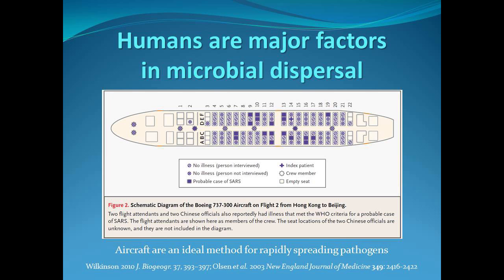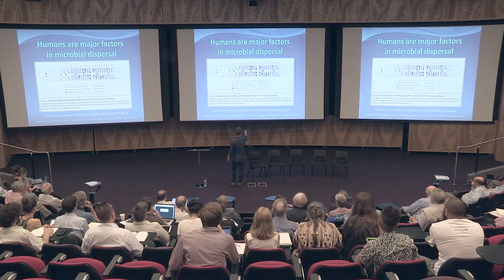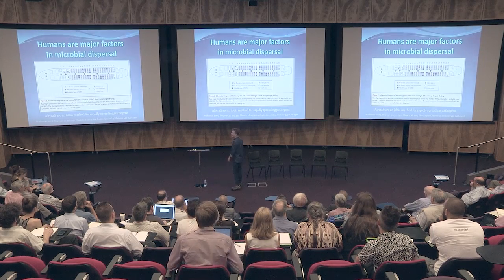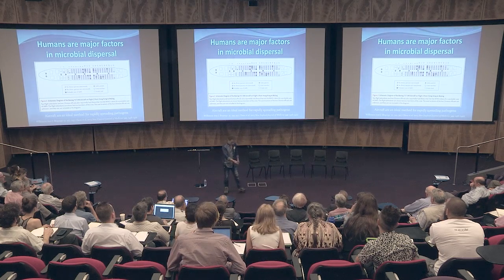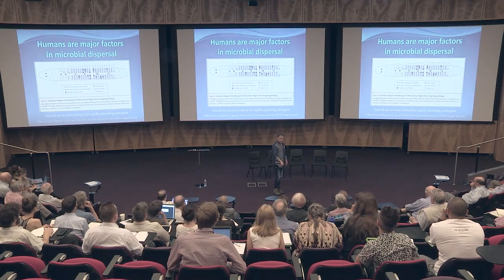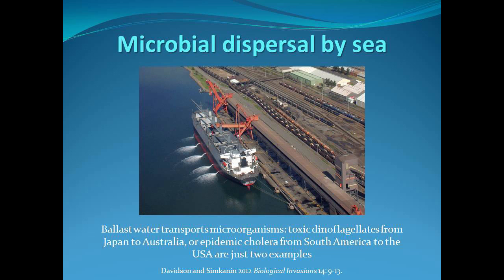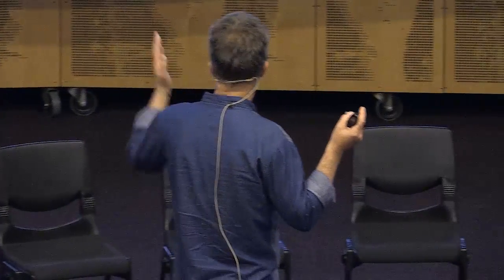We are also major factors in dispersal of microorganisms. A figure of the plane flight from Hong Kong to Beijing carrying the SARS index case shows how infection spreads by air travel. One of the biggest sources of dispersal is ship ballast water - we suck it up, transport it around the world, and pump it out somewhere else. We don't think about microorganisms this way, but we know cholera and toxic dinoflagellates have been transported this way.